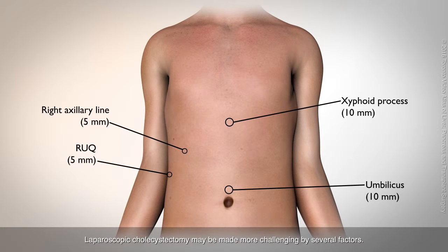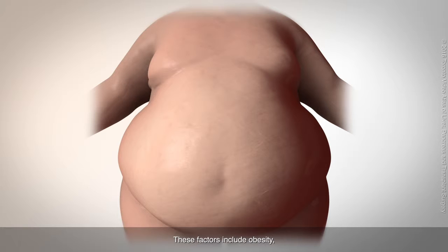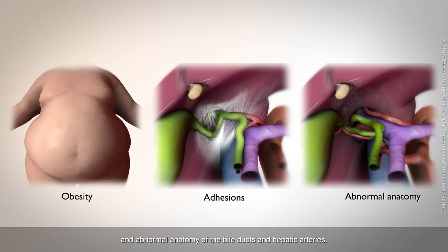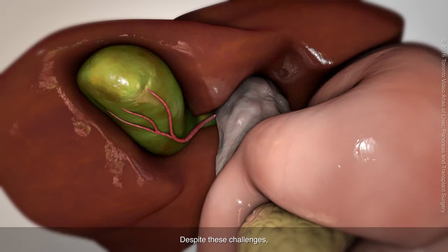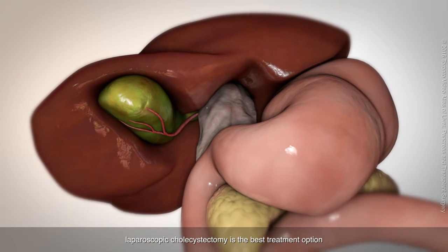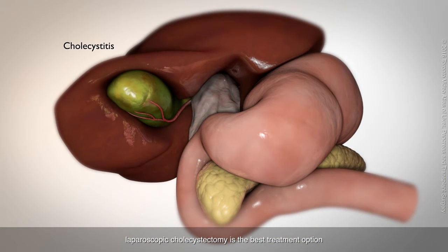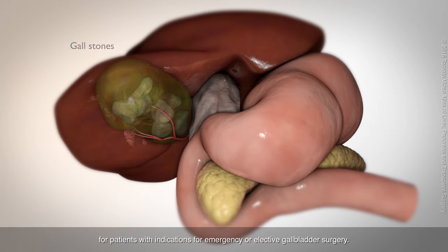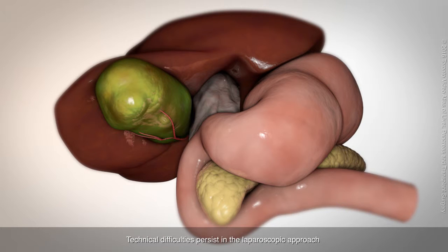Laparoscopic cholecystectomy may be made more challenging by several factors. These factors include obesity, previous abdominal surgery, and abnormal anatomy of the bile ducts and hepatic arteries. Despite these challenges, laparoscopic cholecystectomy is the best treatment option for patients with indications for emergency or elective gallbladder surgery. Technical difficulties persist in the laparoscopic approach in the face of inflammation or other complicating factors.